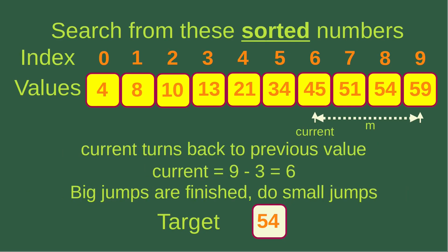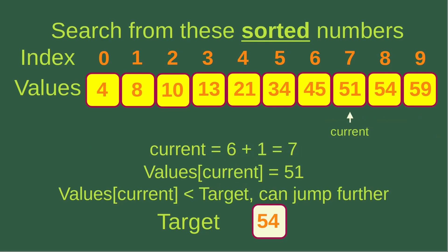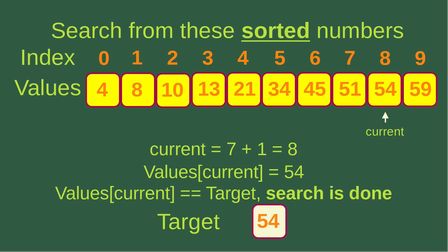We have to turn back to the previous intermediate value, which is 45. The current index is updated by subtracting 3 from the index, so current equals 9 minus 3, which is 6. From now on, we are not allowed to do big jumps — we do small jumps, one element by one element. We move 1 to the right; the current index becomes 7, and the value is 51. 51 is still smaller than 54, so we jump one more element. The current index becomes 8, and the value is 54, which equals the target. The search is done and we found it.